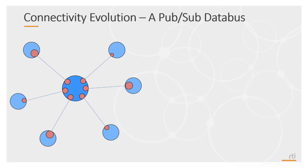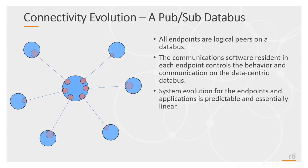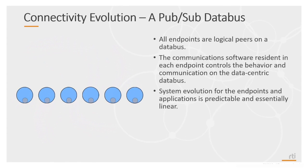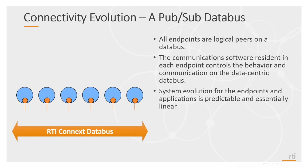Connext, on the other hand, offers a solution that eliminates these issues using a virtual data bus, with communication software resident on each endpoint. The central broker is eliminated and point-to-point communication can be established through a process of discovery, and addition of new nodes is now predictable and essentially linear.